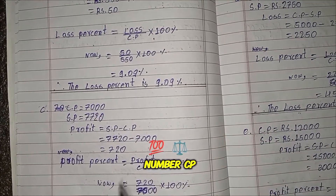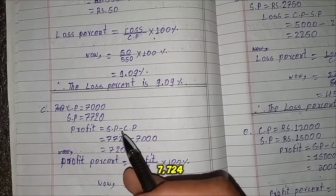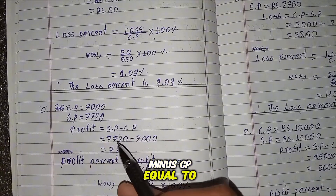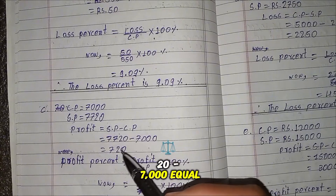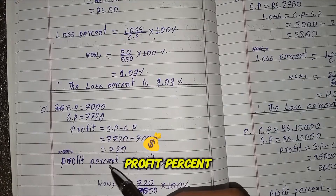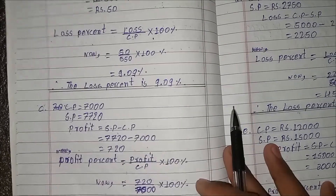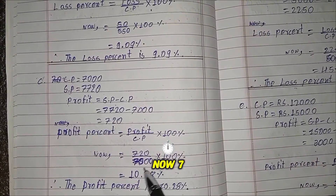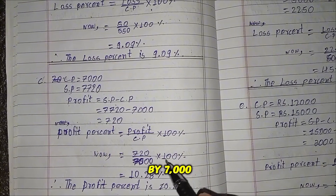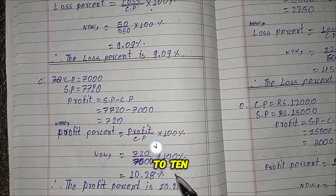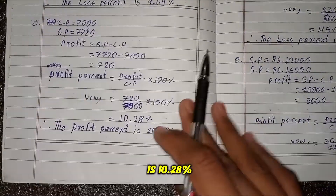Part C: CP equals 7,000, SP equals 7,720. Profit equals SP minus CP equals 7,720 minus 7,000 equals 720. Profit percent equals profit divided by CP multiplied by 100 percent equals 720 by 7,000 multiplied by 100 percent equals 10.28 percent. Therefore, the profit percent is 10.28 percent.